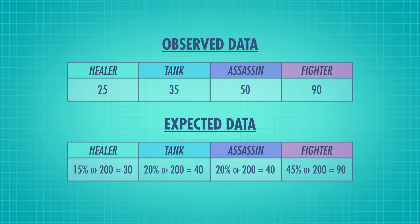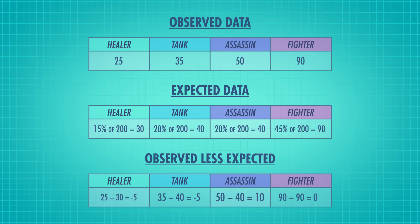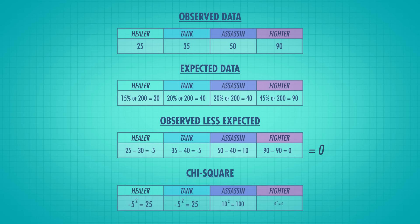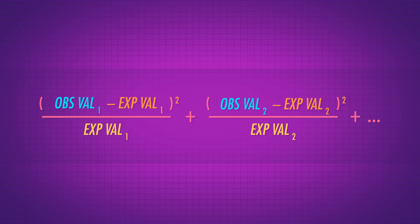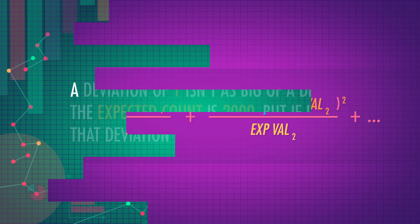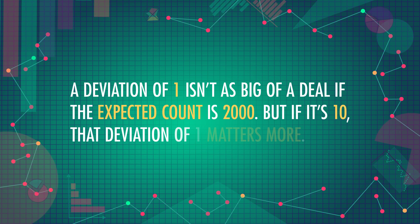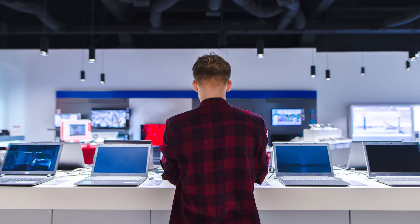We need a test statistic. Our general formula applies, with the numerator being the count we observe for each category minus the count we'd expect. But if you tried to add up all these differences, you'd always get zero, so we need a better way to measure. Using a chi-square, we square them before adding them all up. For the denominator, instead of a standard error, we use the expected counts — because the amount a count deviates from its expected frequency should be scaled by that expected frequency. A deviation of 1 isn't as big a deal if the expected count is 2,000, but if it's 10, that deviation of 1 matters more.